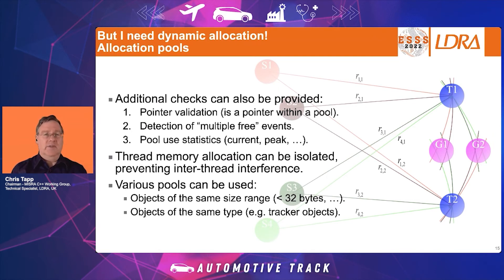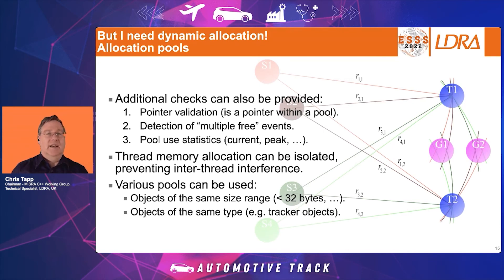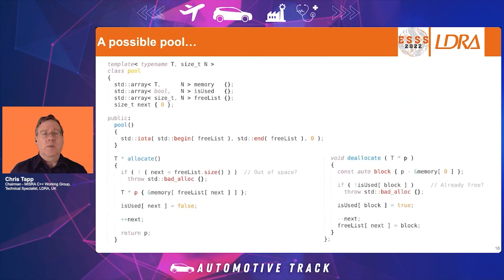We can consider using different types of pools — for example, pools for objects of the same size. If we have objects with a size of less than 32 bytes, a single pool manager can deal with those even if the objects are not the same type. On the other hand, we can have pools that specialize in dealing with objects of a particular type — for example, tracker objects all stored within one pool.